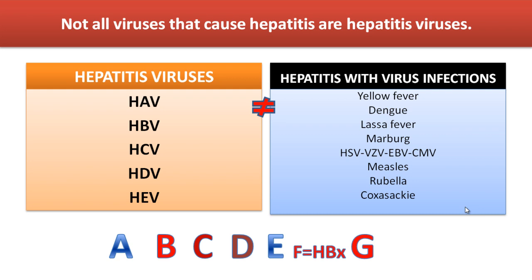Recently a new type has also been discovered — hepatitis G virus — but it does not cause hepatitis, so it is not considered part of the hepatitis viruses. Hepatitis F was also discovered but it was considered a mutant of hepatitis B virus, so it is also not included. For us, when we say hepatitis viruses, we totally mean five viruses: Hepatitis A, B, C, D, and E.